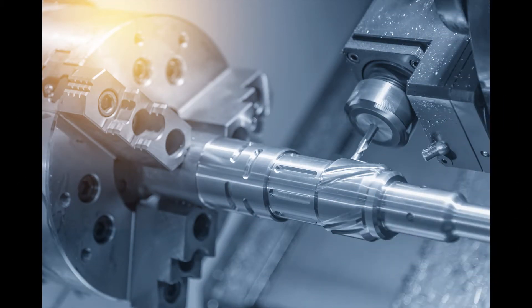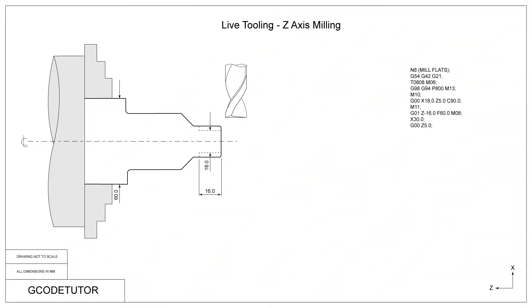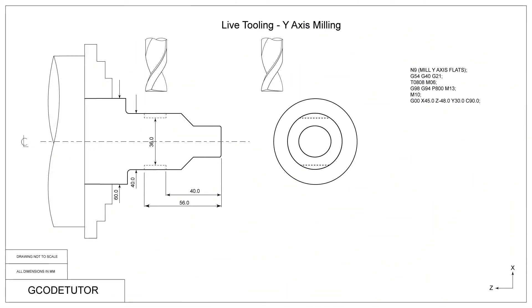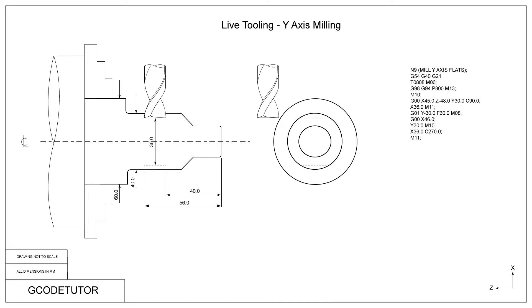The CNC lathes you find in a modern machine shop have a lot more than just two axes. Most have more than one spindle, live tooling, and some have more than one turret. I explain how to program these machines as well as a two-axis lathe. I go into detail over how live tooling works and how we use it to create bores and holes in different parts of the machine, including milling flats using a Y-axis.